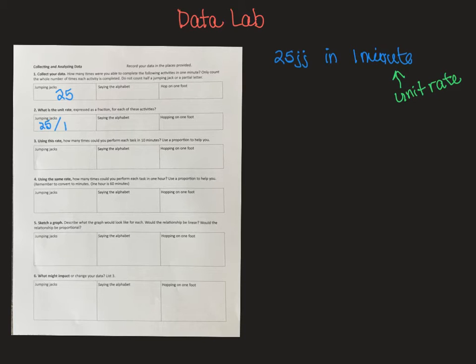So, if I come over here, I can say I have 25 jumping jacks in one minute and it is really a good idea to be labeling when you are doing proportions. It's a big help, really helps you out.